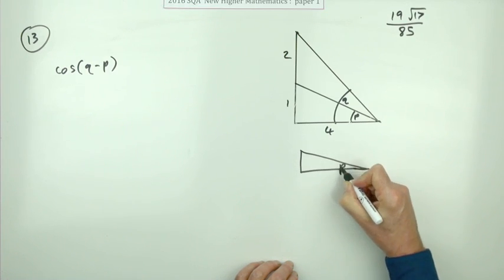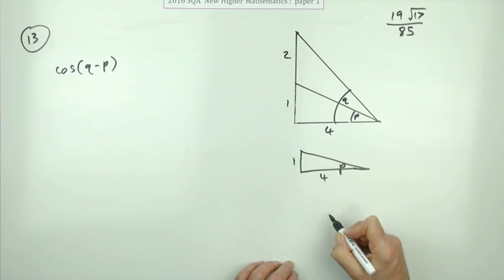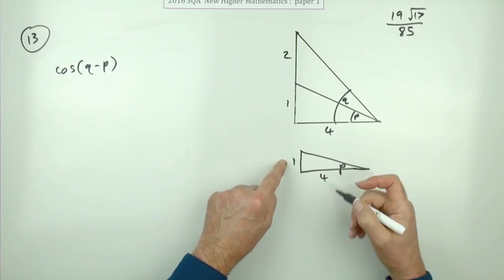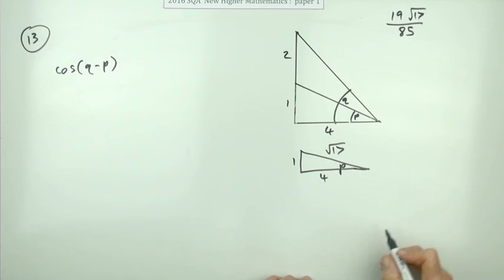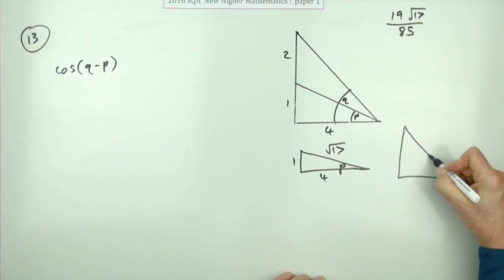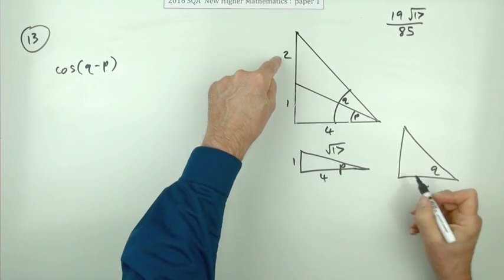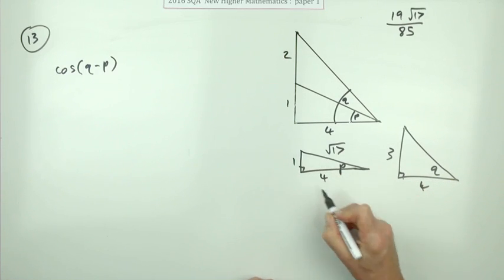So there's the little p triangle which is just one and four, and then using Pythagoras in that, that would be 16 plus 1 is 17, so its hypotenuse is √17. And you've got the big triangle which has got the q in it, that's four and this time that makes three, so that's much easier for your Pythagoras because you know it's a 3-4-5 triangle.